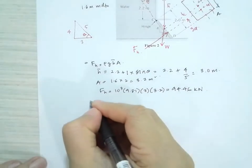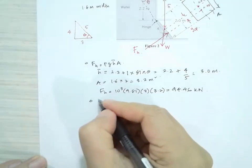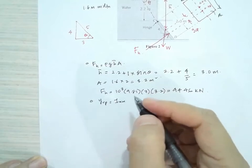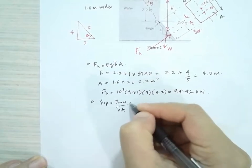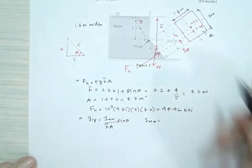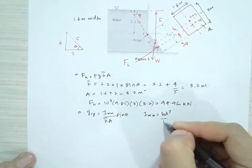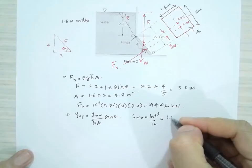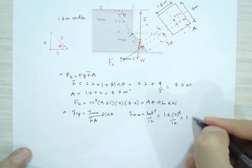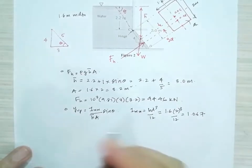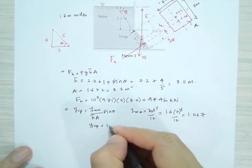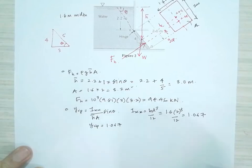Next, we can calculate Y_CP, this distance here. Using the formula, Y_CP = I_xx / (H̄A sin θ). I_xx for a rectangle is bd³/12. So that is 1.6 × 2³ / 12 = 1.067. Then we can calculate Y_CP directly, which equals 1.067 × (4/5).